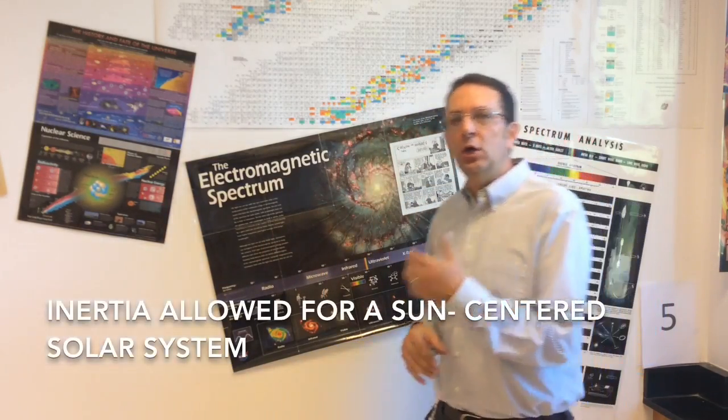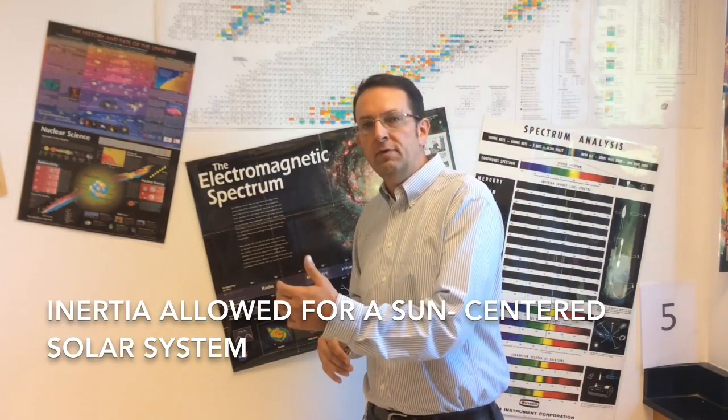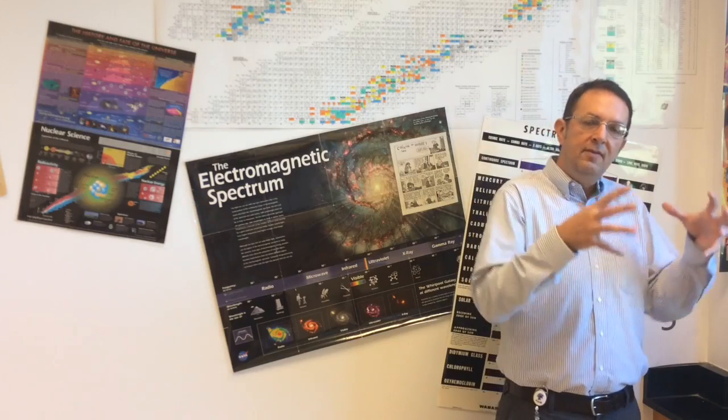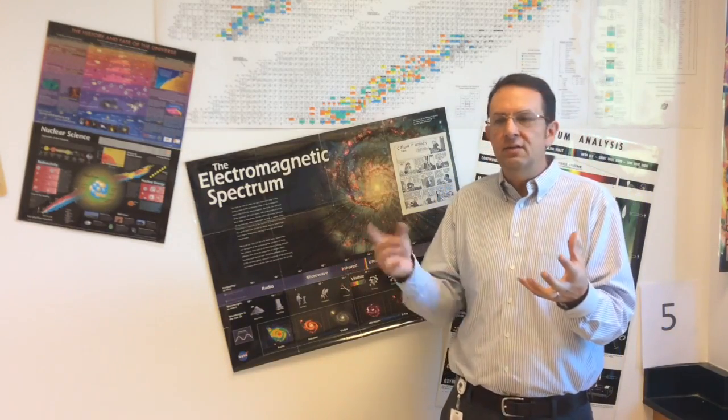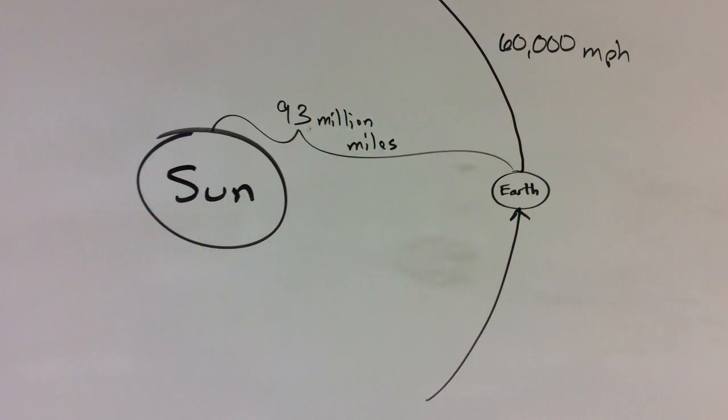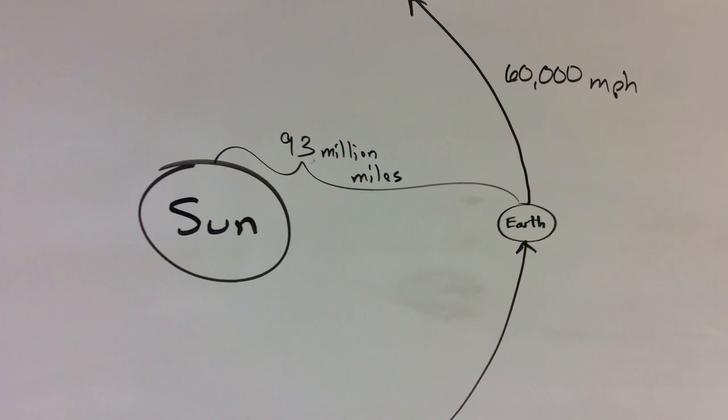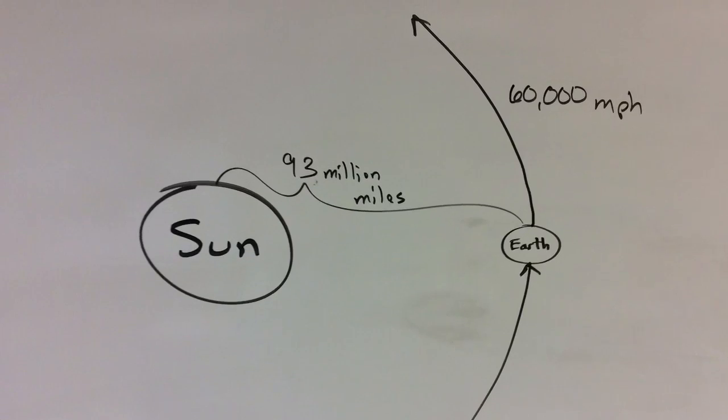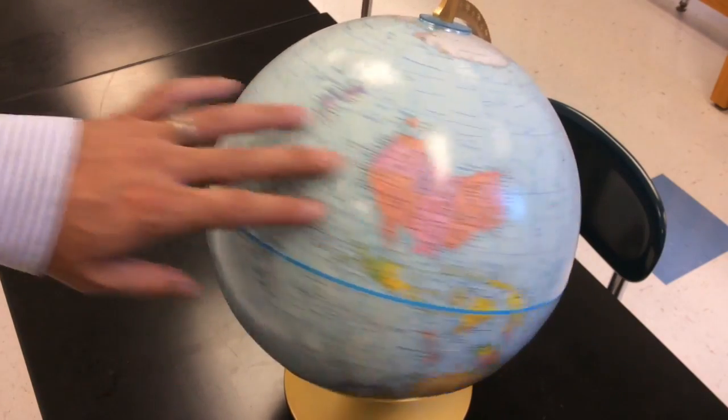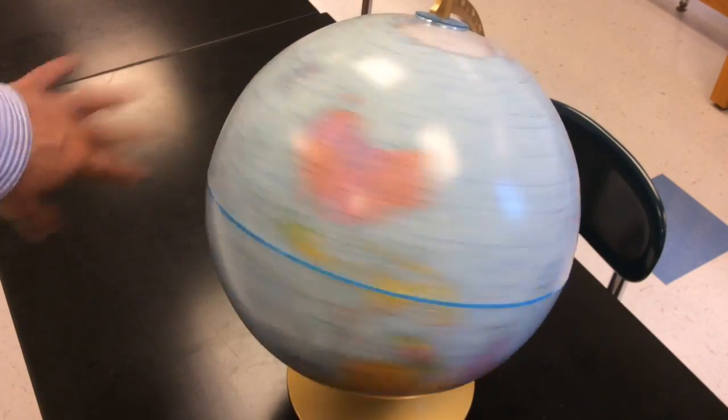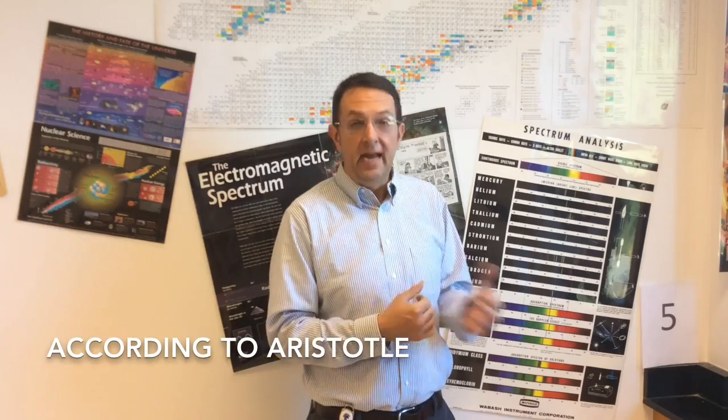So when Galileo came up with this idea that objects have a natural tendency to keep moving, it allowed the Earth to move. Prior to that, Aristotle said that the Earth is the center of the universe. It can't move because according to all the calculations, we would have to be traveling at 60,000 miles an hour going around the Sun, or 1,000 miles an hour around the equator of the Earth. Can't happen.